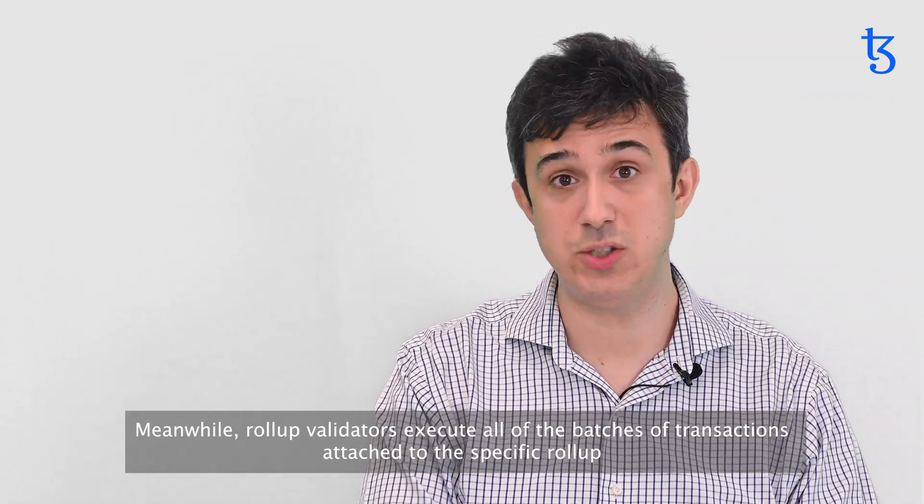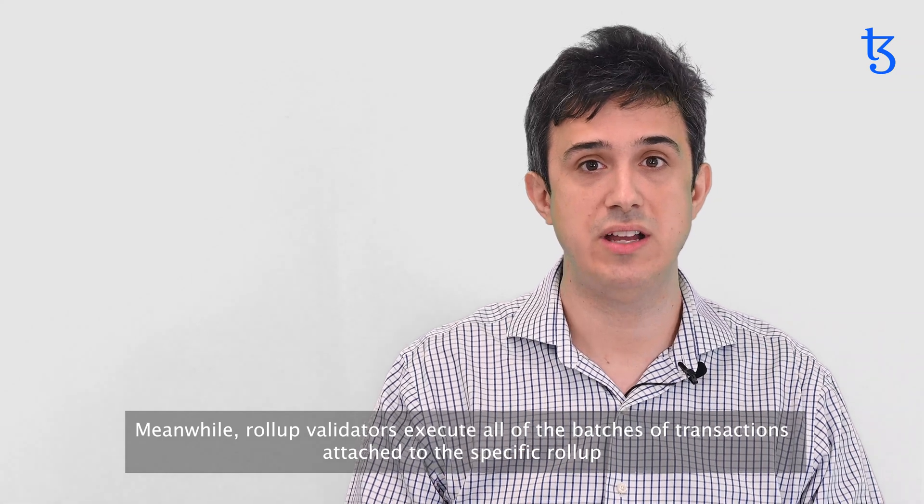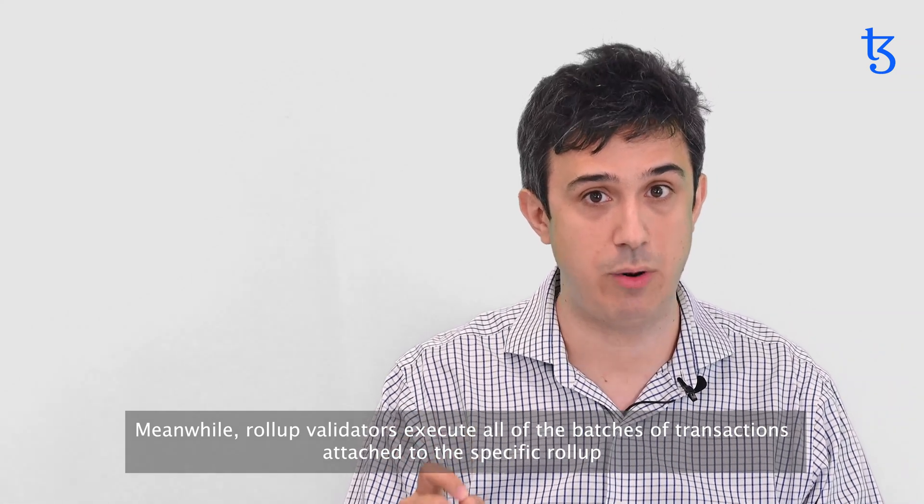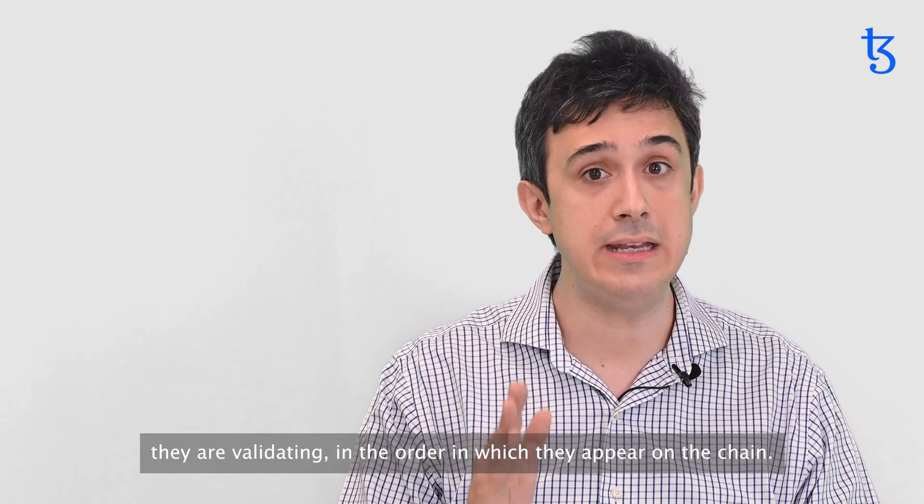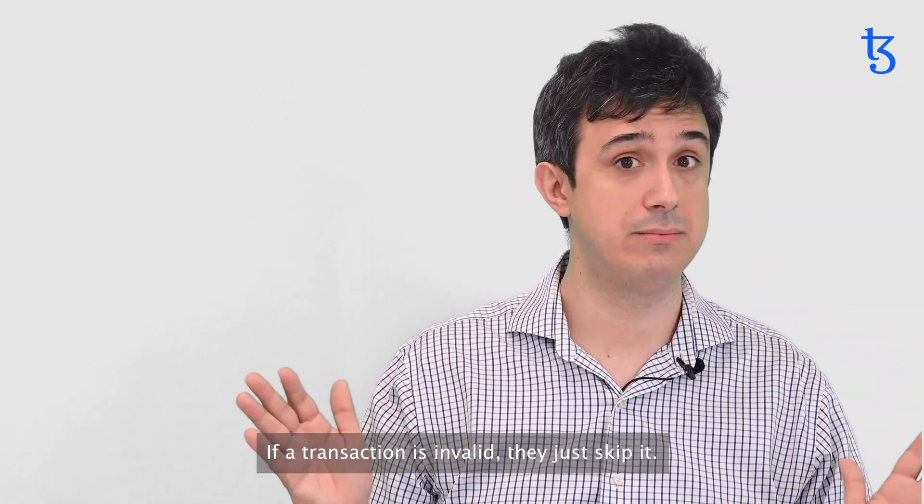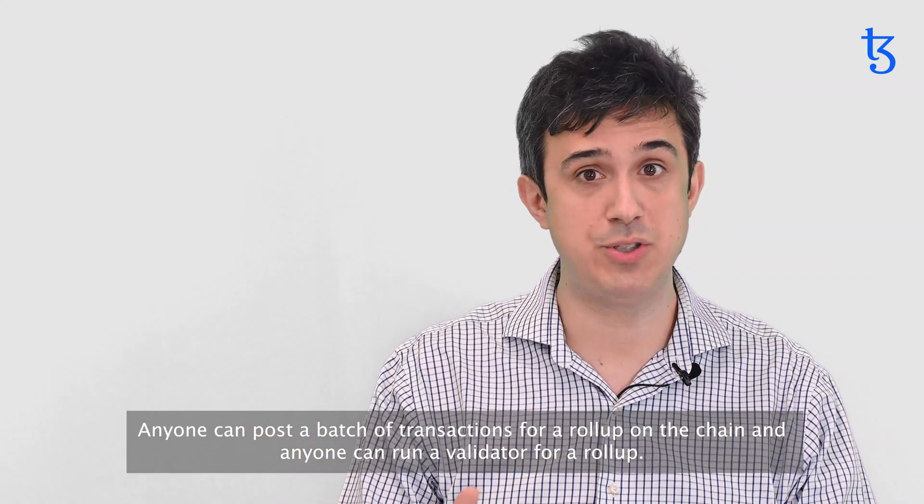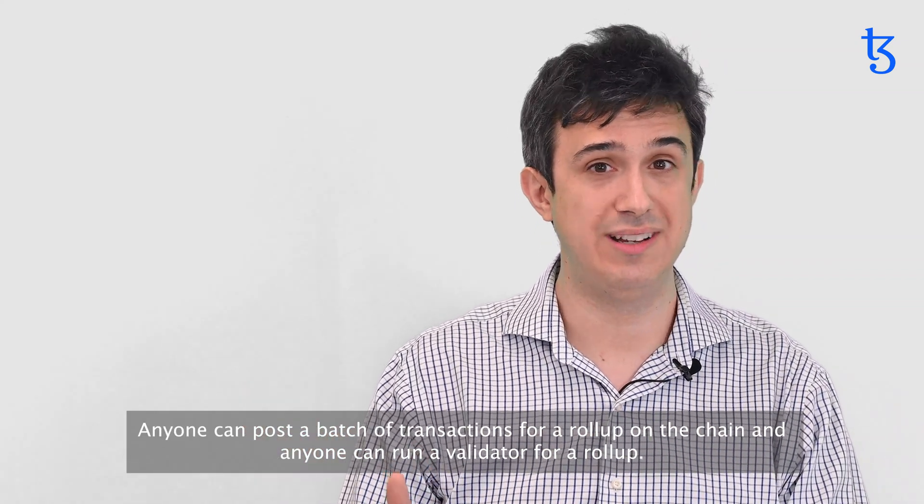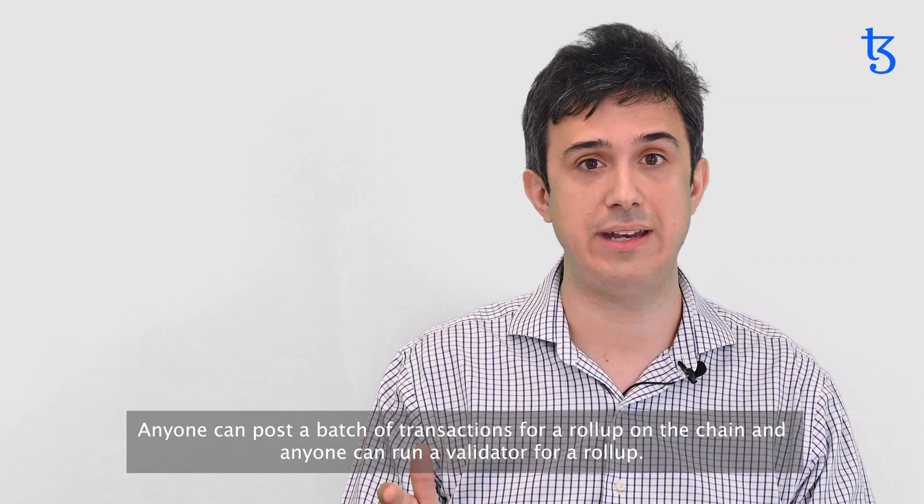Meanwhile, rollup validators execute all the batches of transactions attached to the specific rollup they are validating in the order in which they appear on a chain. If a transaction is invalid, they just skip it. Anyone can post a batch of transactions for a rollup on a chain, and anyone can run a validator for a rollup.